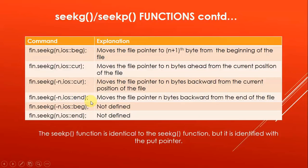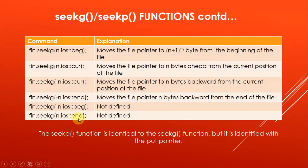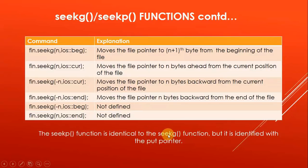If n is negative, the file pointer will move backward; if n is positive, the file pointer will move forward. Note that fin.seekg(-n, ios::beg) is not defined because we cannot move before the beginning of the file. Similarly, fin.seekg(n, ios::end) is also not defined because we cannot move beyond the end of the file. The seekp() function is identical to seekg() but is identified with the put pointer and is associated with an ostream object.